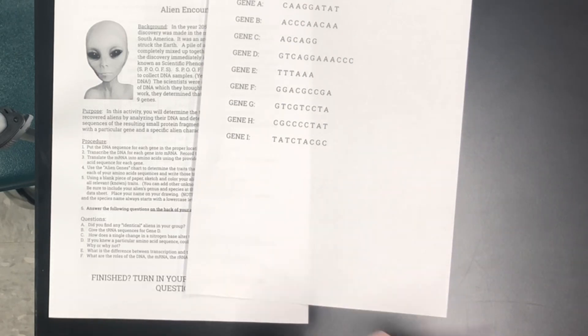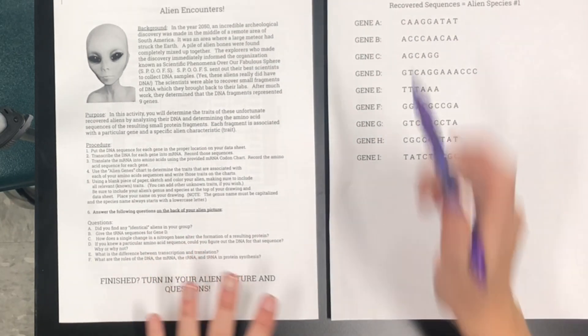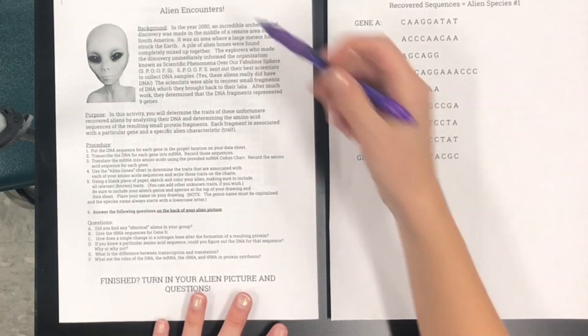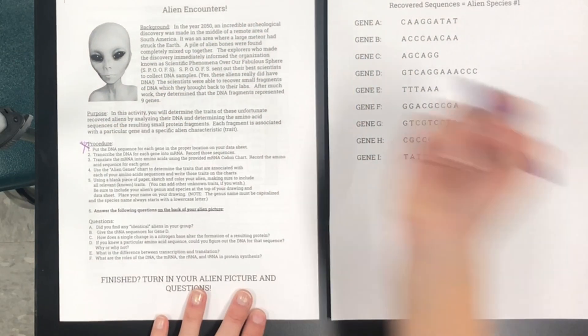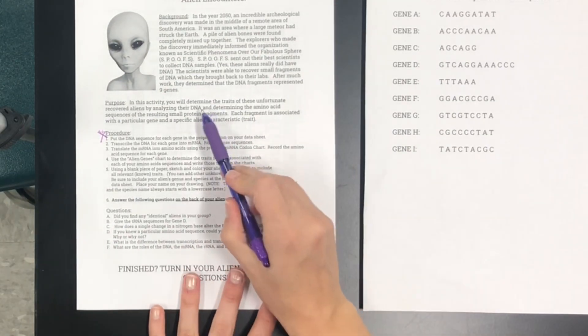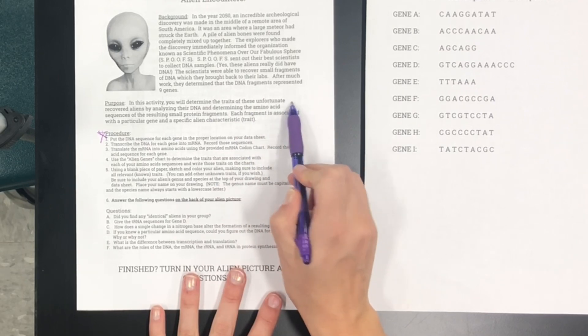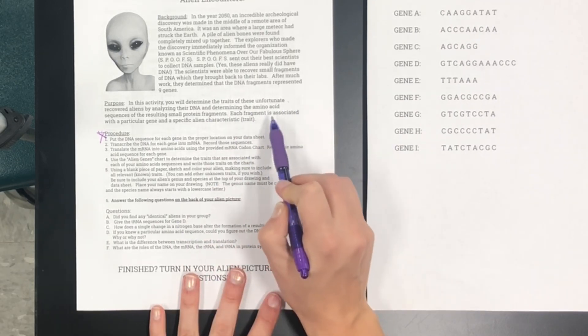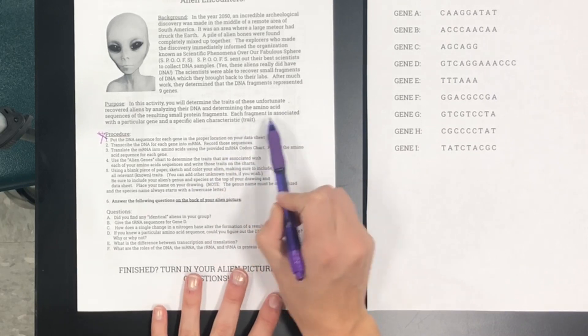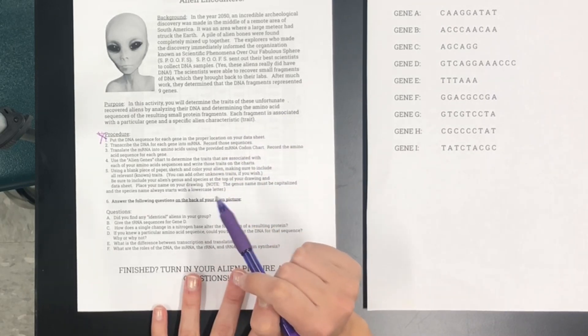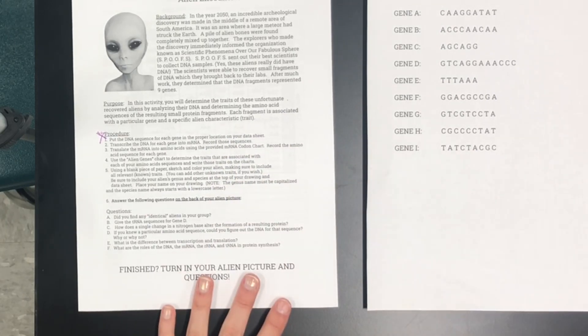I'm just gonna start with number one though. So like I said be sure to read the background and you are gonna follow the procedure that is right here. So in this activity you're gonna determine the traits of these alien species that you have found the DNA for and try to determine what their features are like based on the amino acid sequences that you discover after doing protein synthesis.